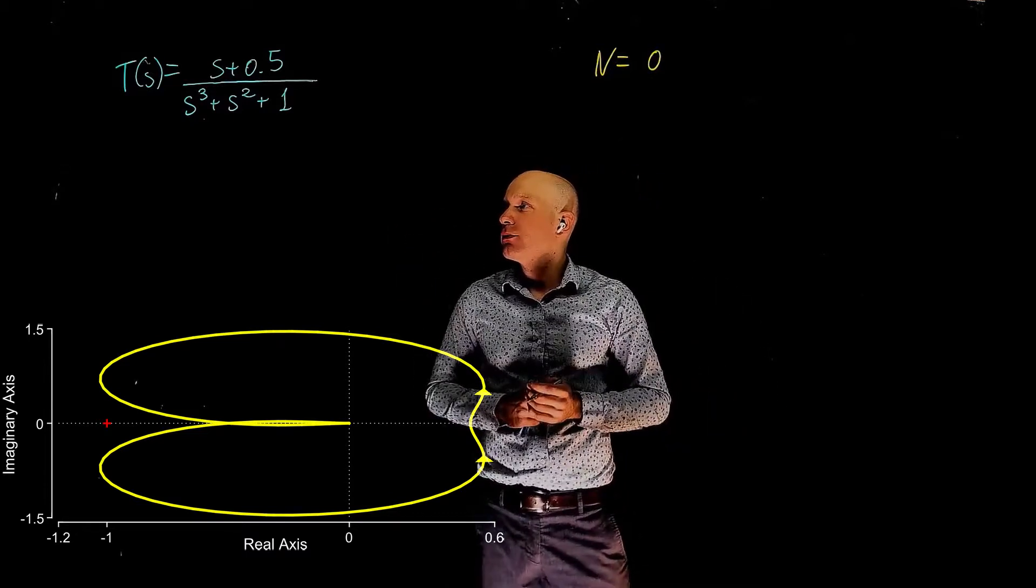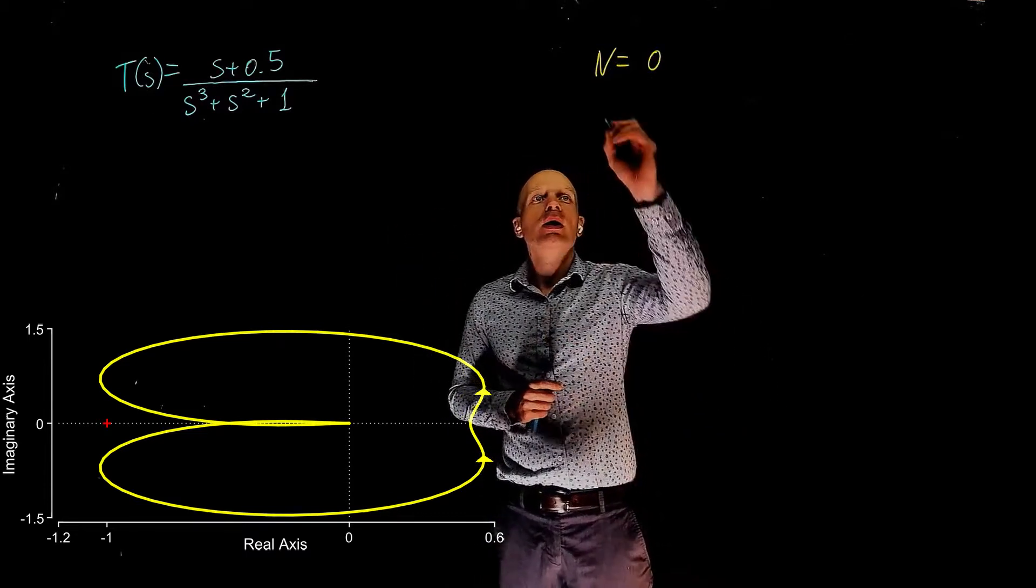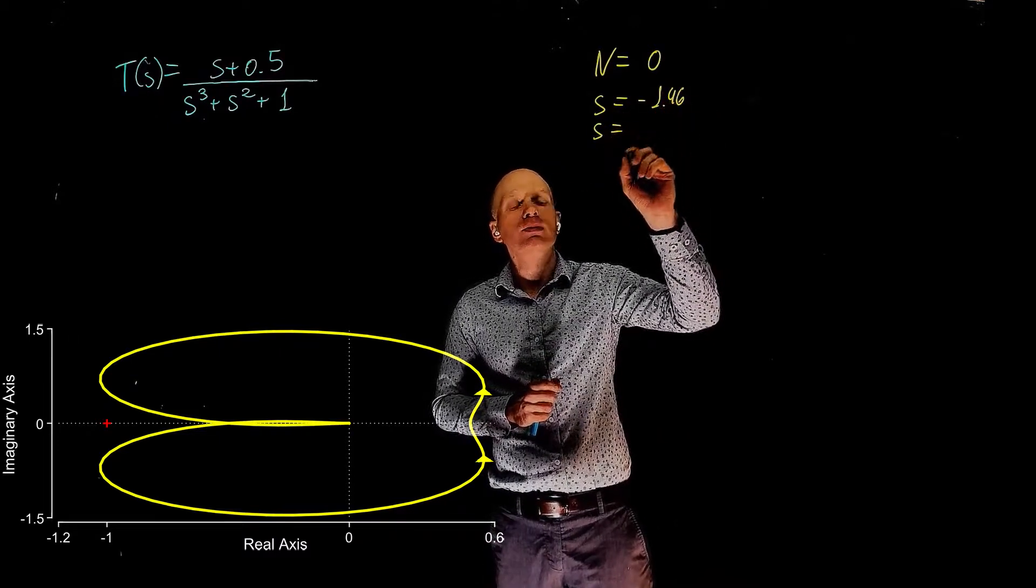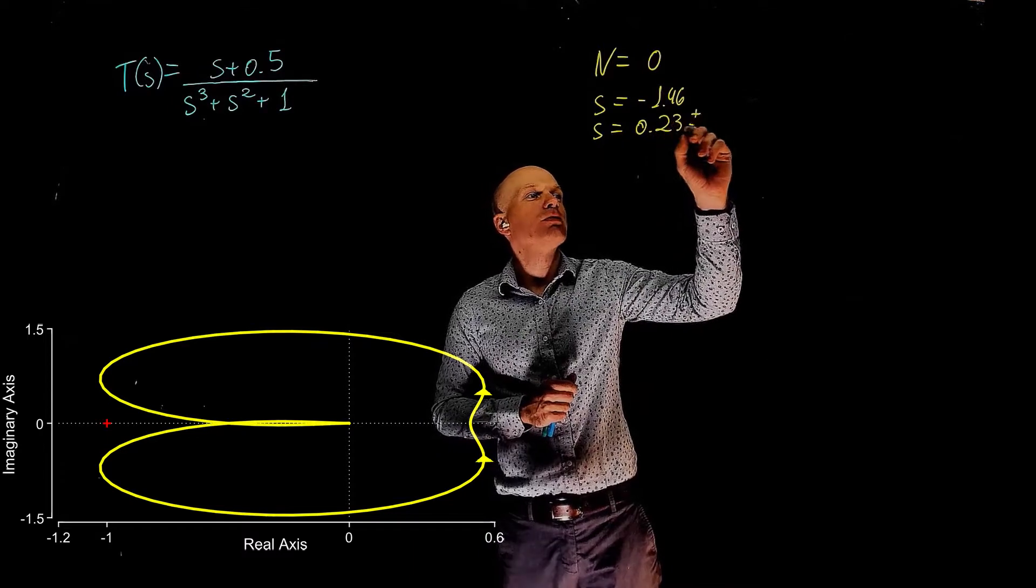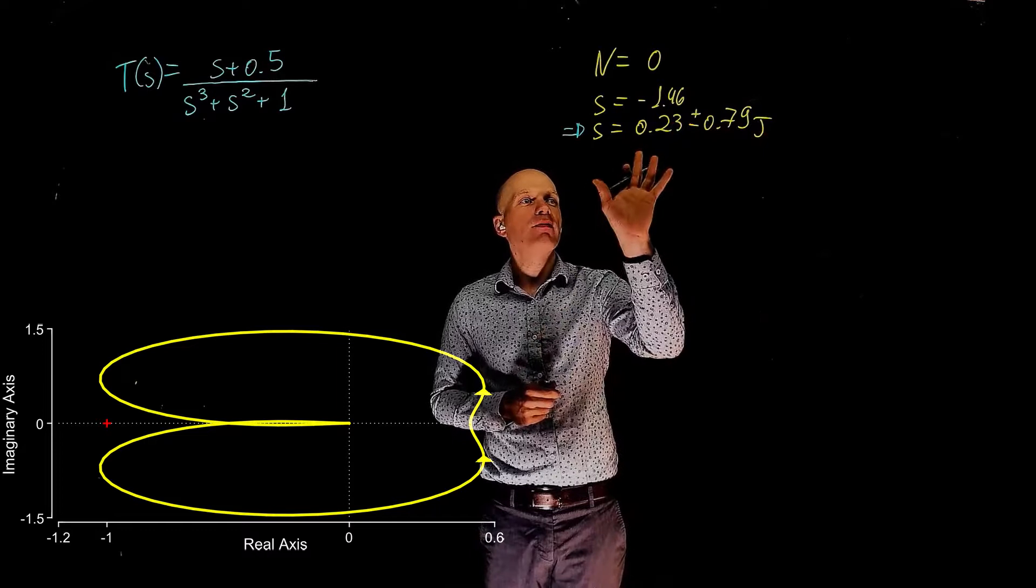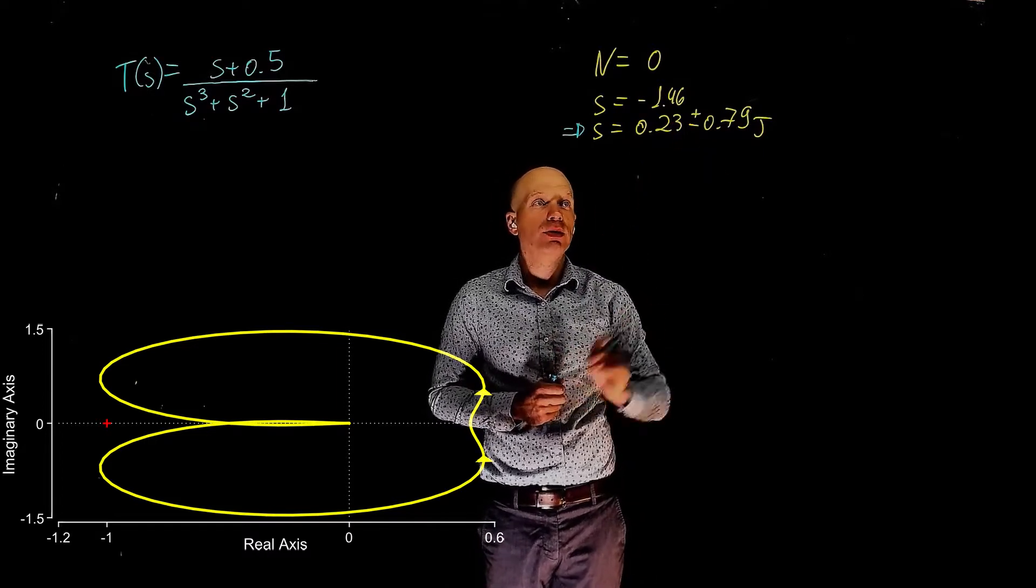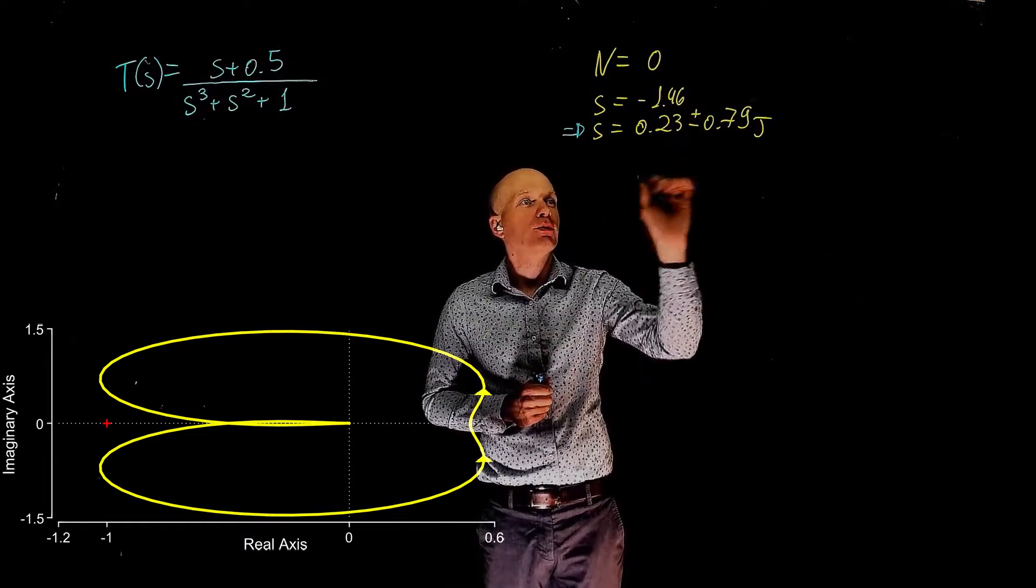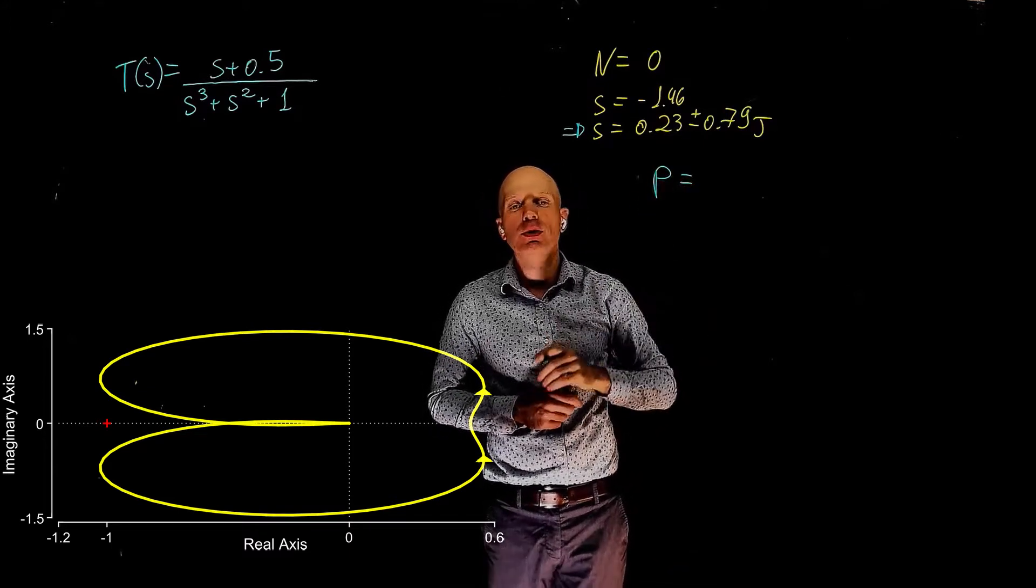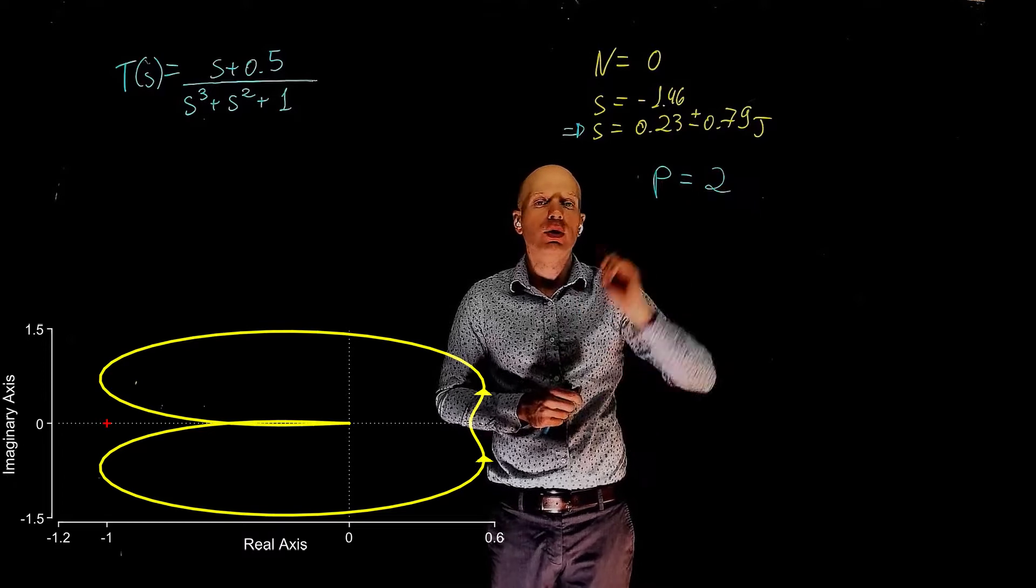The poles of this transfer function are s equals negative 1.46 and s equals 0.23 plus minus 0.79j. Here we have a pair of complex conjugate poles and we see that the real part of these poles is positive, hence the number of unstable poles of the open-loop transfer function is equal to 2.